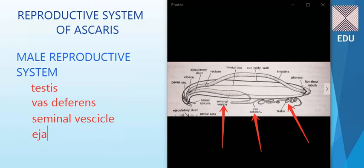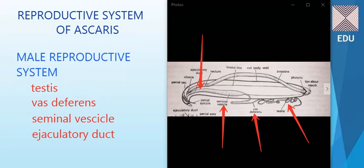Whenever required, the sperms are ejaculated through the next part, which is the ejaculatory duct — the fourth part of the male reproductive system. The sperms will be ejaculated out of the male Ascaris through the cloacal aperture.